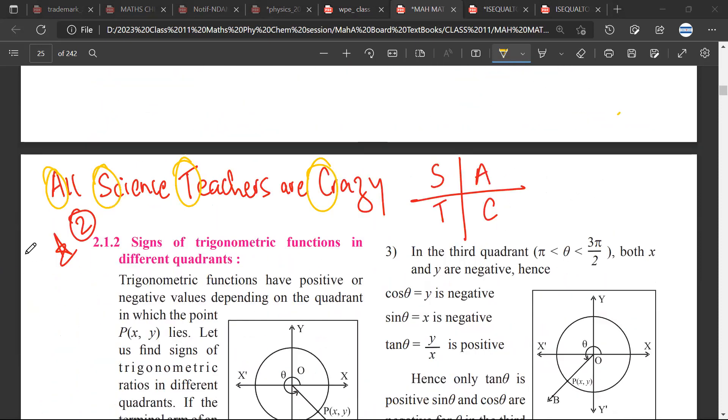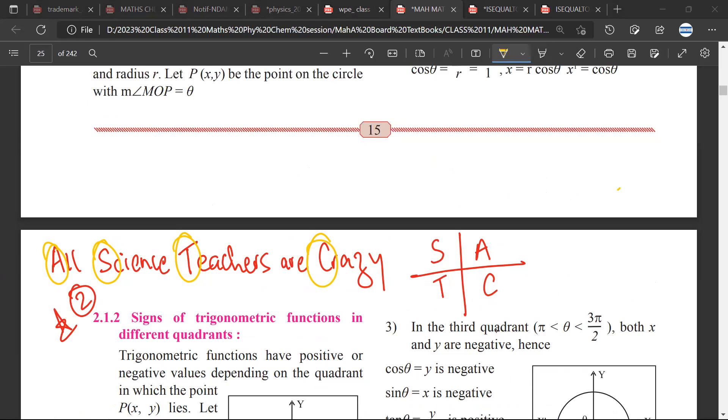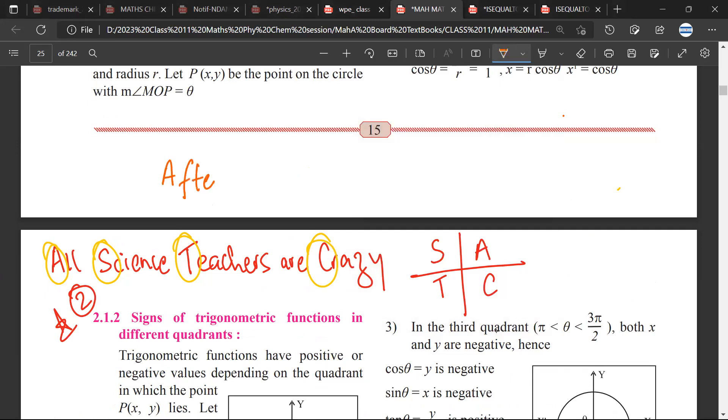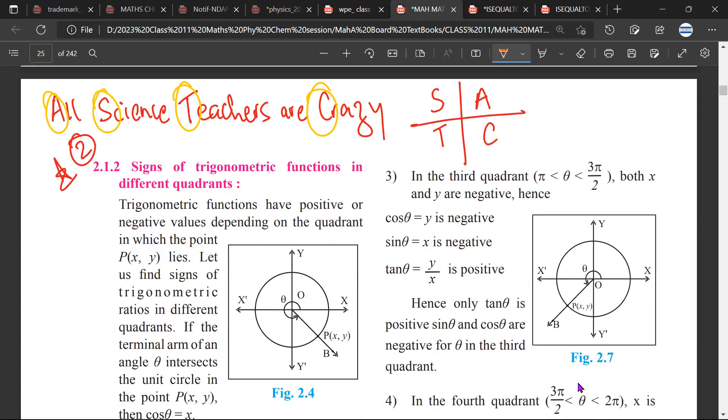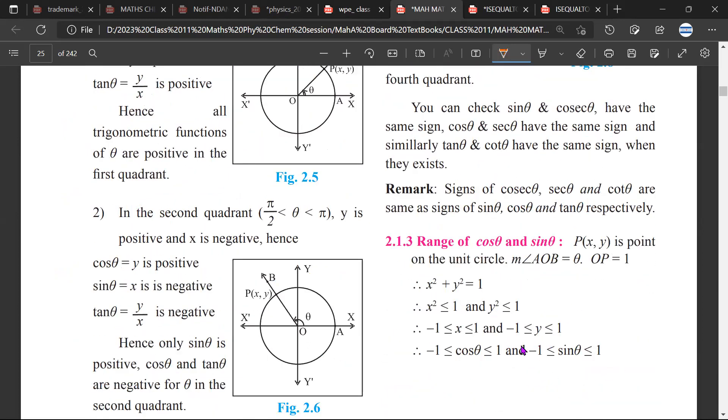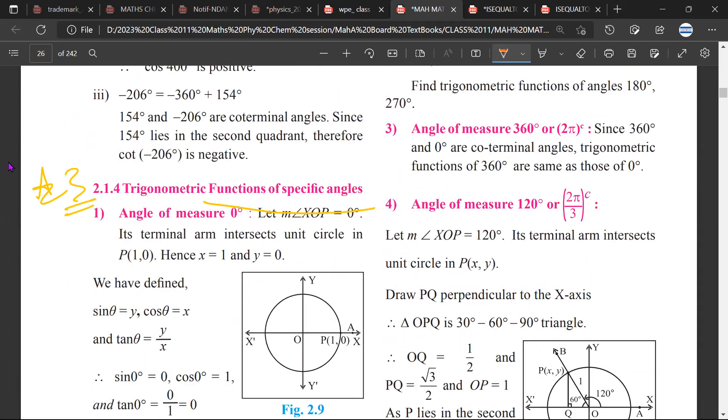The second thing that we have done is we have understood the signs of the trigonometric functions in different quadrants. We have two mnemonics: one is All Science Teachers Are Crazy, the other one is After School To College. Whichever you prefer you can remember. Once we have done this, we need to understand the trigonometric functions at specific angles.